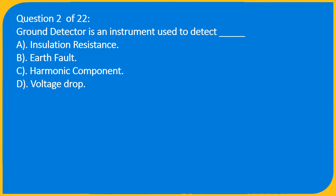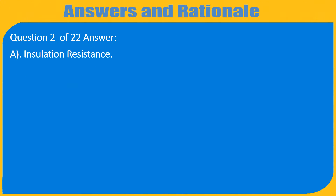Question 2 of 22: Ground detector is an instrument used to detect which of the following? A. Insulation resistance, B. Earth volt, C. Harmonic component, D. Voltage drop. Answer: A. Insulation resistance.